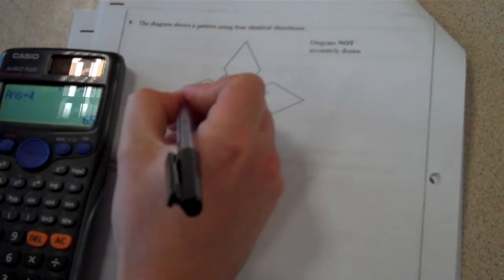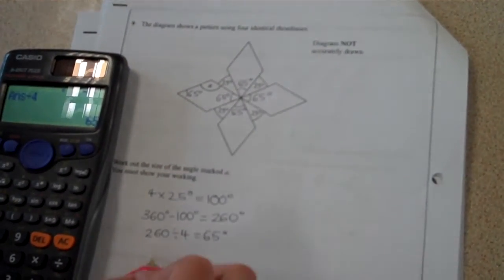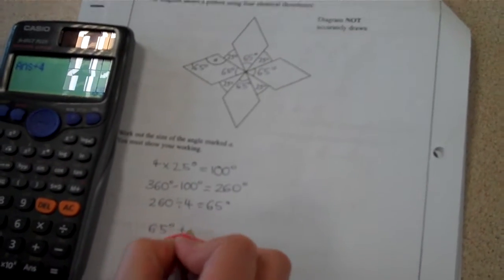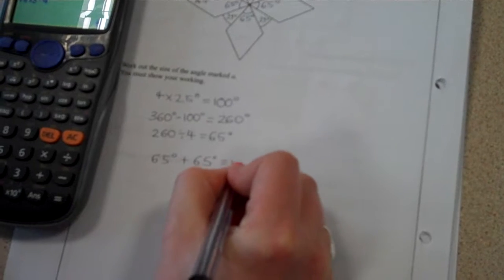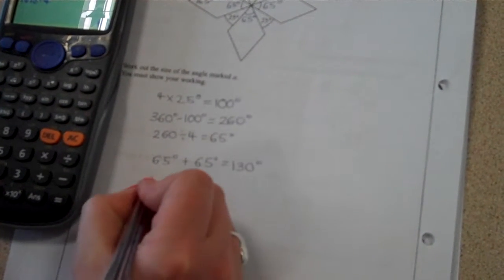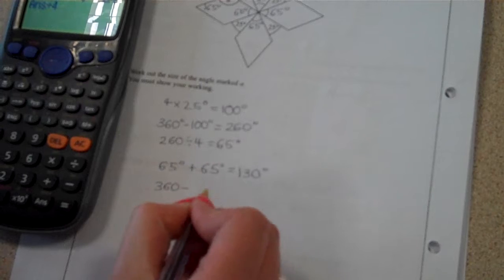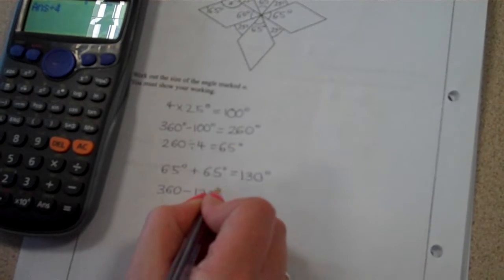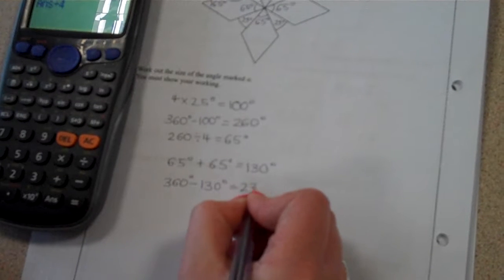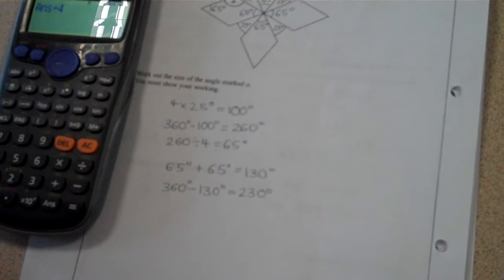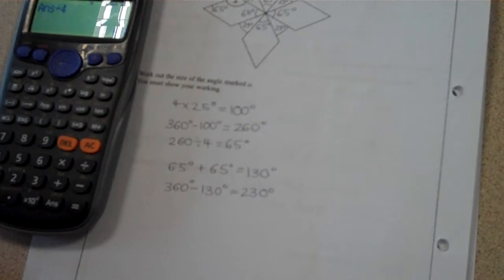So this one here is also 65 degrees, so the two of those together, 65 degrees plus another 65 degrees, means that I must have 130 degrees for those two angles. And so again, if I then take that away from 360 degrees, it means that I must have 230 degrees left for the other two angles within my rhombus.